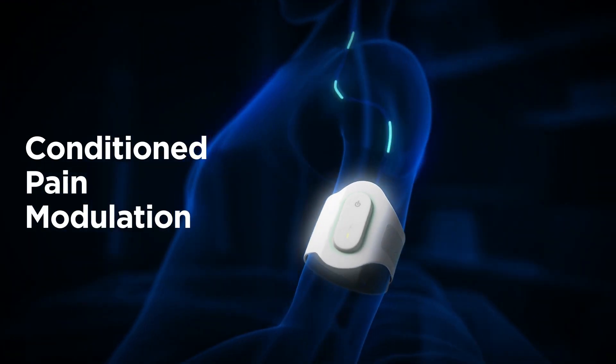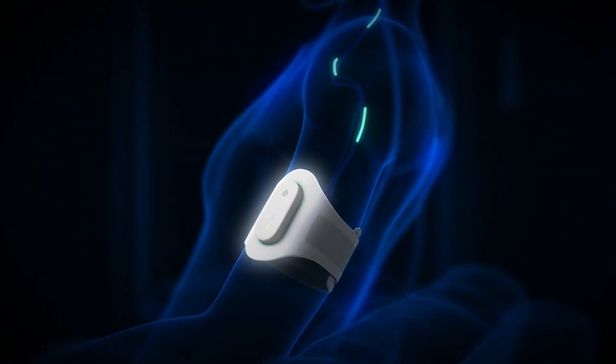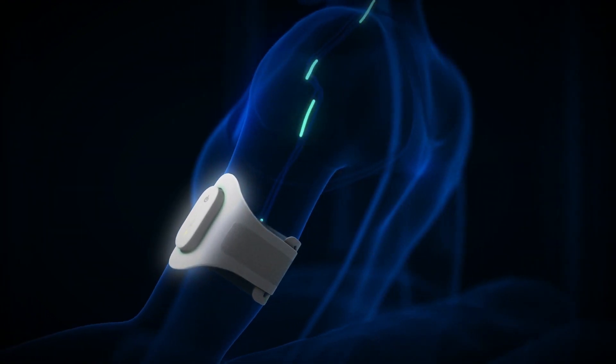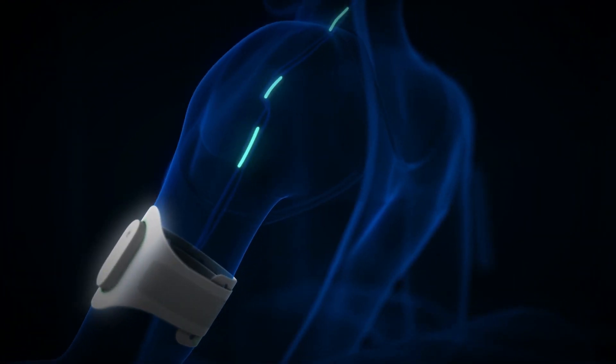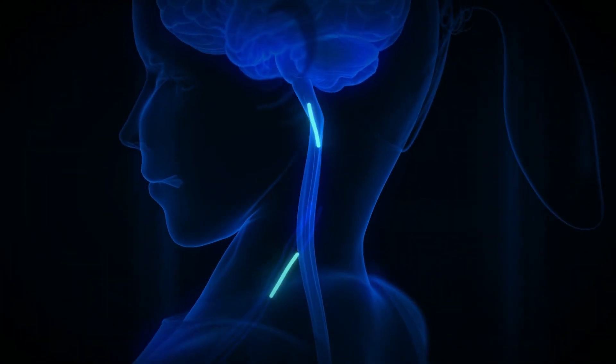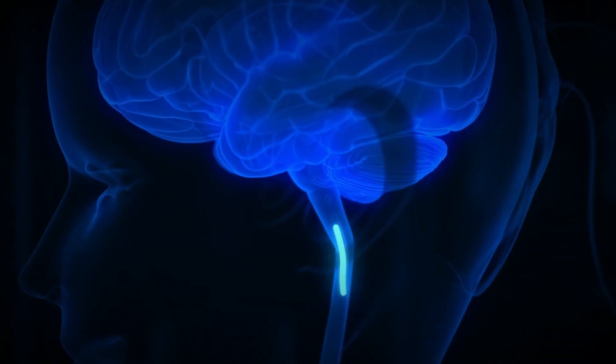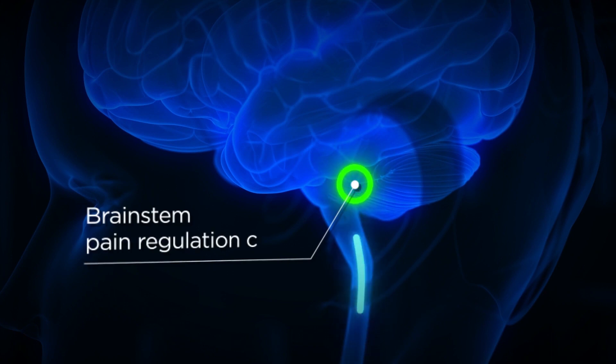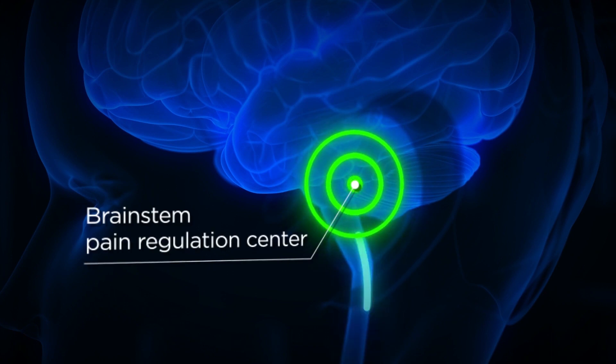Narivio stimulates small peripheral nerves in the upper arm, mainly C fibers, by specially designed electrical signals. The message from the arm is received by the brainstem pain regulation centers that can inhibit pain signals coming from all parts of the body.